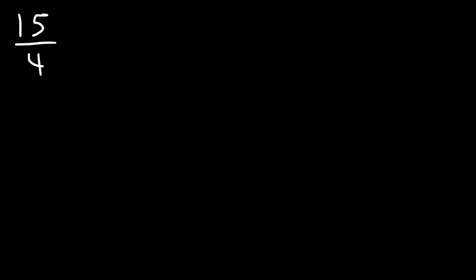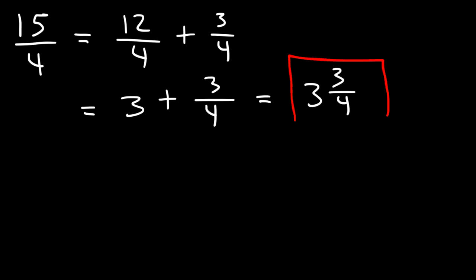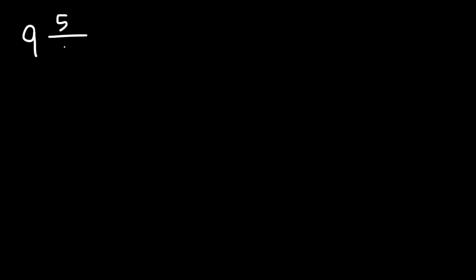Now the last thing we need to do is convert 15 over 4 into a mixed number. 15 is basically 12 plus 3, and 12 divided by 4 is 3, so the answer is 3 and 3/4. This is the final answer as a mixed number.